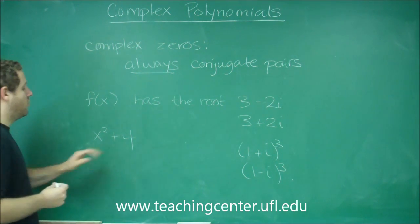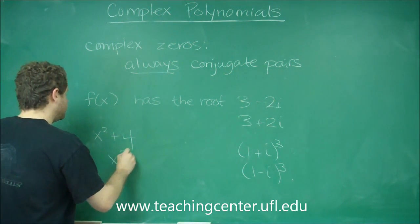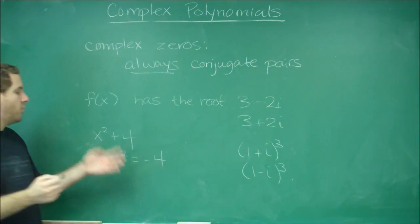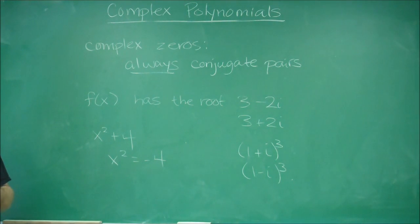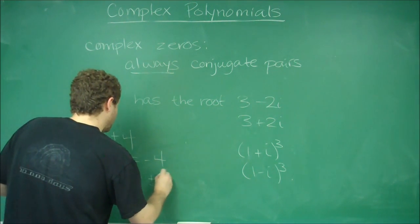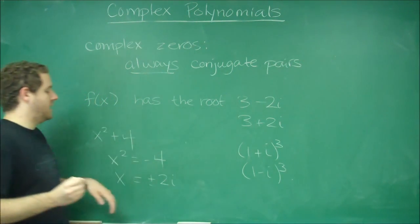So you can see here what we're doing to solve this is we say x squared equals negative 4. Now before we said that couldn't be done, but now that we have complex numbers, this can easily be done. It's x equals plus or minus 2i.